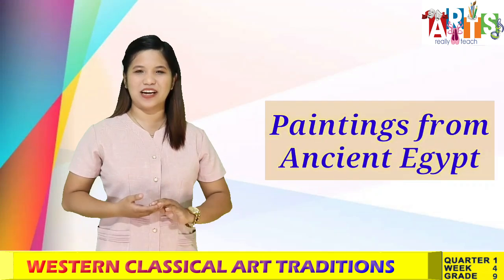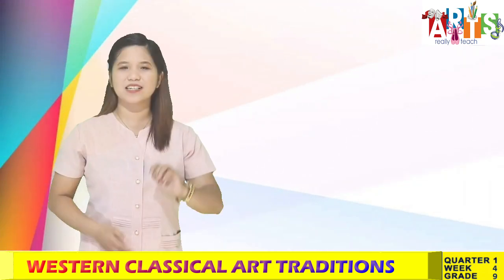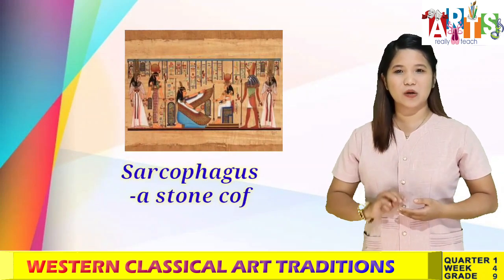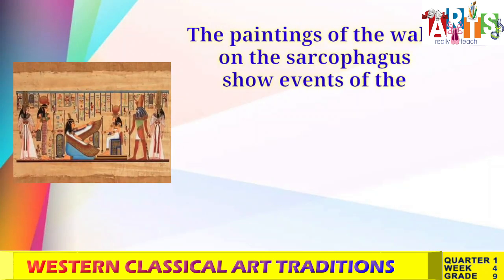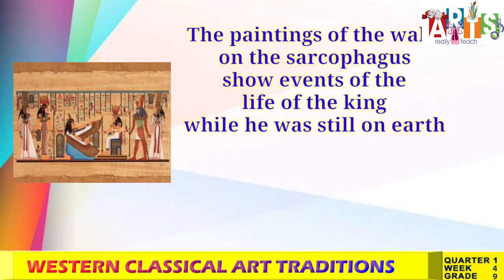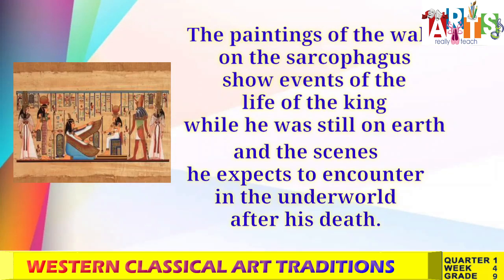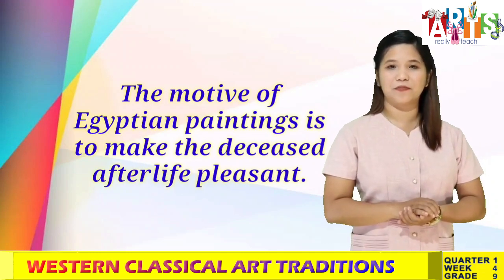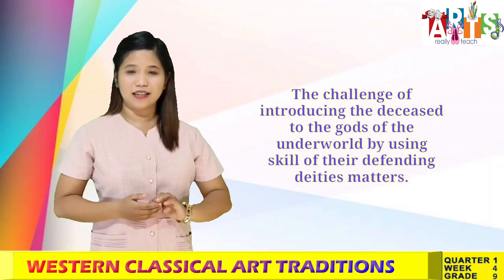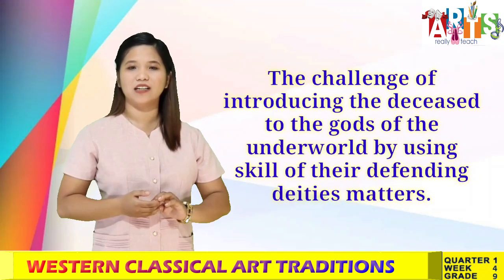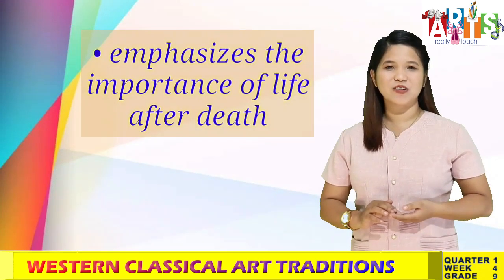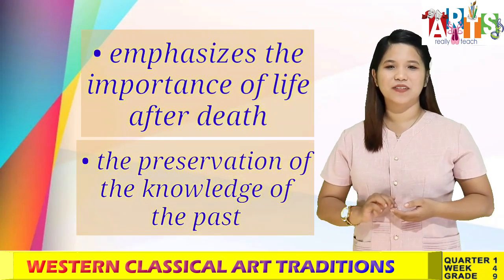Next are the paintings from ancient Egypt. One of the examples is the painting from the Sarcophagus of Tutankhamen. When we say Sarcophagus, it is a stone coffin or tomb. The paintings on the walls of the Sarcophagus show events of the life of the king while he was still on earth and the scenes he expects to encounter in the underworld after his death. So the motive of Egyptian paintings is to make the deceased's afterlife pleasant. It also emphasizes the importance of life after death and the preservation of the knowledge of the past.